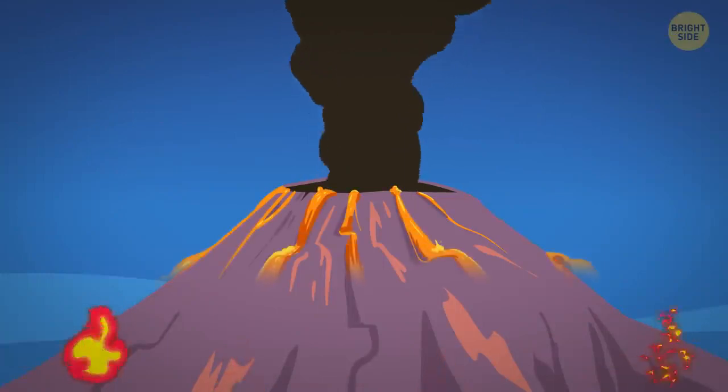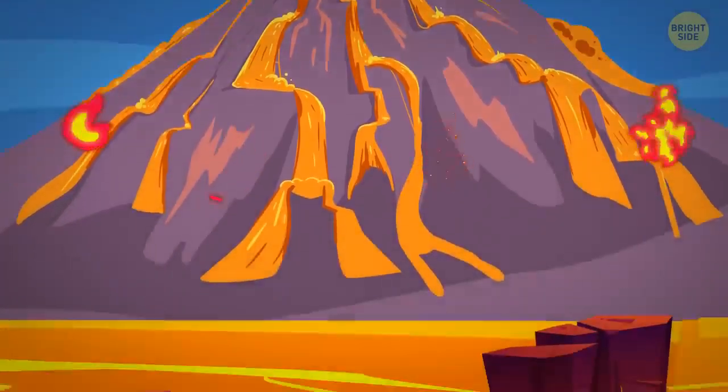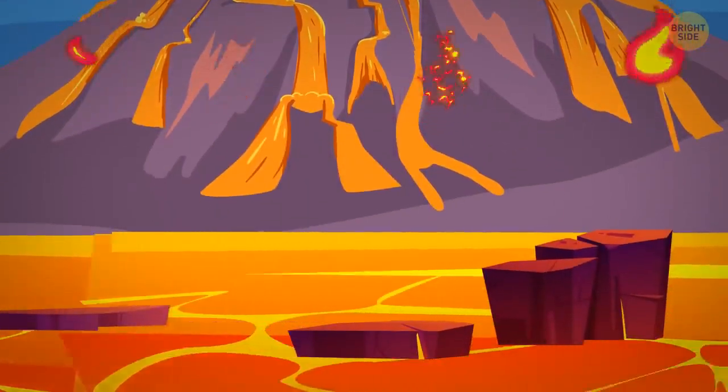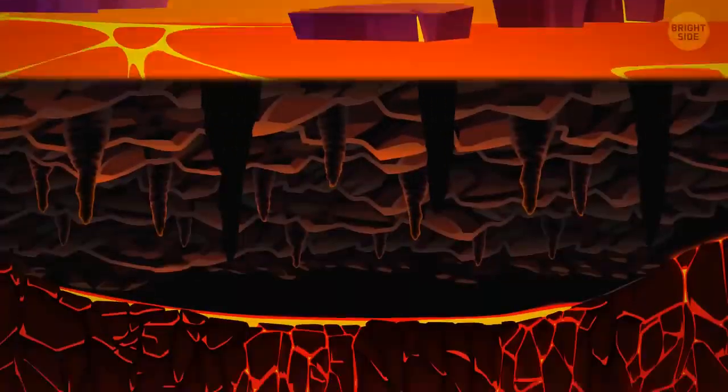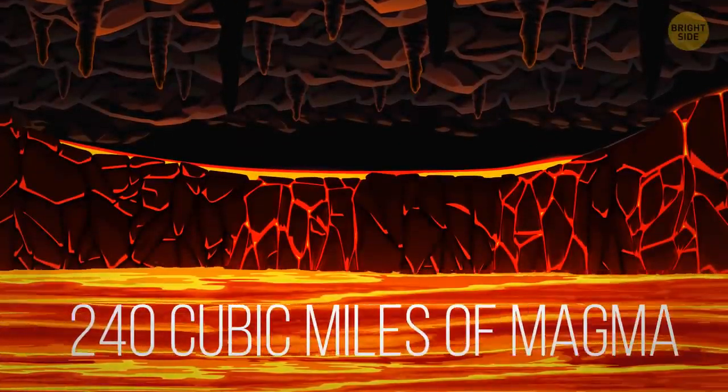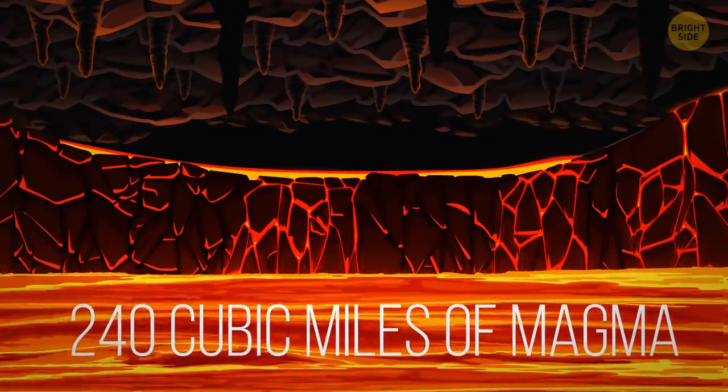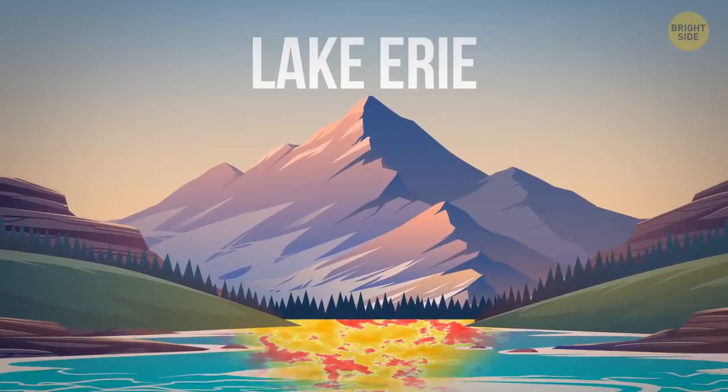Supervolcanoes are in a league of their own when it comes to natural disasters. Surprisingly, it's not all about size or height. A volcano is dubbed super if it erupts more than 240 cubic miles of magma. That's more than enough to overfill Lake Erie.